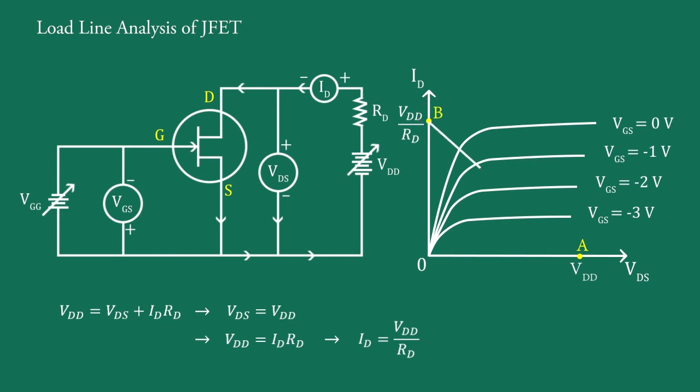Now connect these two points by a straight line. This line is called DC load line. In this figure, this is active zone.